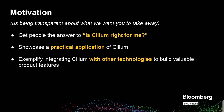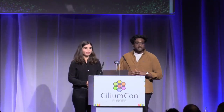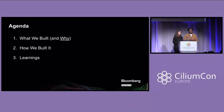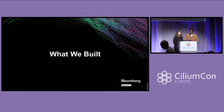The high-level overview of the talk today is going to be: first, what we built, and importantly, how did we decide to build that. The second thing is how we built it. And then finally, we're going to be talking about some of the things that we learned during the process, and then maybe it's going to be helpful for you as well. With that, I will hand it over to Anne, who's going to talk about what we built.